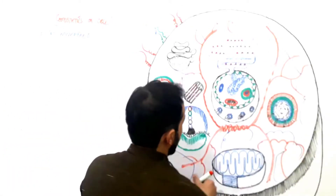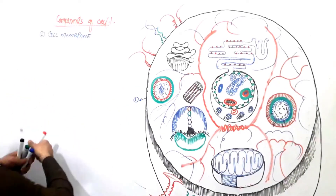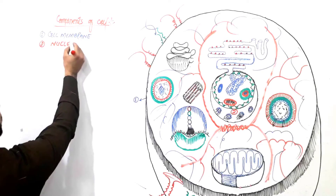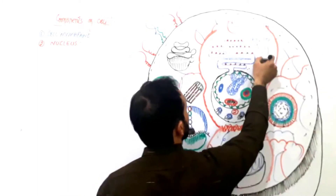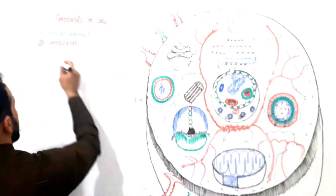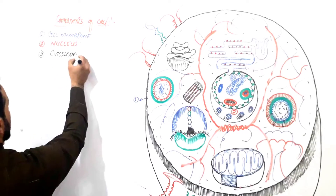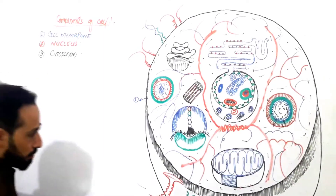The second part we will discuss is the nucleus. Inside our cell we have the nucleus. Then inside the cell membrane there is a viscous fluid filling the whole cell, and this fluid is called the cytoplasm. So the third part is the cytoplasm. I will discuss each part in a separate video, so don't worry.